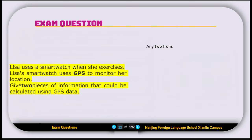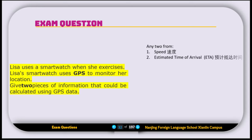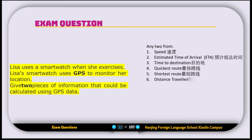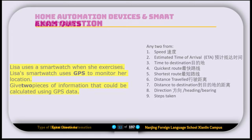Here's a question: Lisa uses a smartwatch when she exercises. Lisa's smartwatch uses GPS to monitor her location. Give two pieces of information that could be calculated using the GPS data. Things that can be calculated include: speed, estimated time of arrival, time to destination, quickest route, shortest route, distance traveled, distance to the destination, direction, heading and bearing, and steps taken.